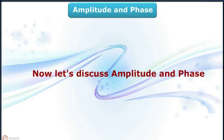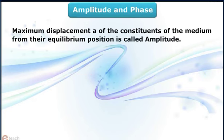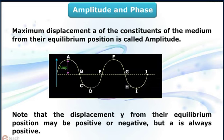Let's discuss amplitude and phase. Maximum displacement a of the constituents of the medium from their equilibrium position is called amplitude. Note that the displacement y from their equilibrium position may be positive or negative, but a is always positive.